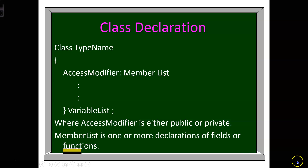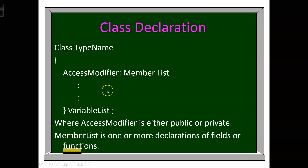For a class declaration, we use the keyword class — that's a lower case C — followed by the type name. We have the access modifier, which is either public or private; the order doesn't matter. You would have your public functions listed here — these are the functions that client code can use. Client code is any code that's outside of the class. And then usually your variable list is private.